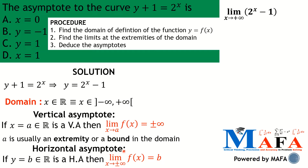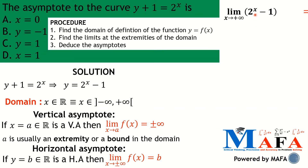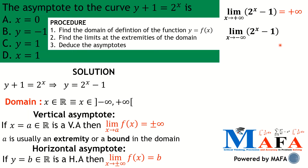The limit as x tends to plus infinity of two raised to the power x minus one is plus infinity. Since two is greater than one, as x tends to a very large number, two to the power x also becomes very large. Subtracting one from that very large number still gives a very large number — infinity. So the limit at plus infinity is plus infinity.